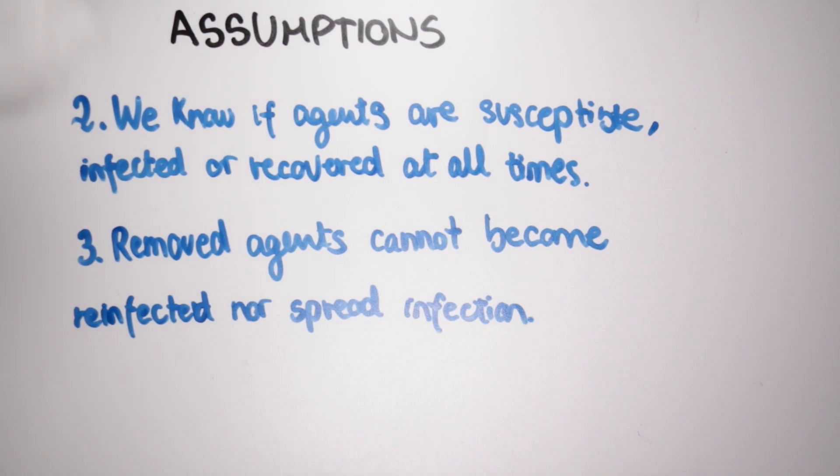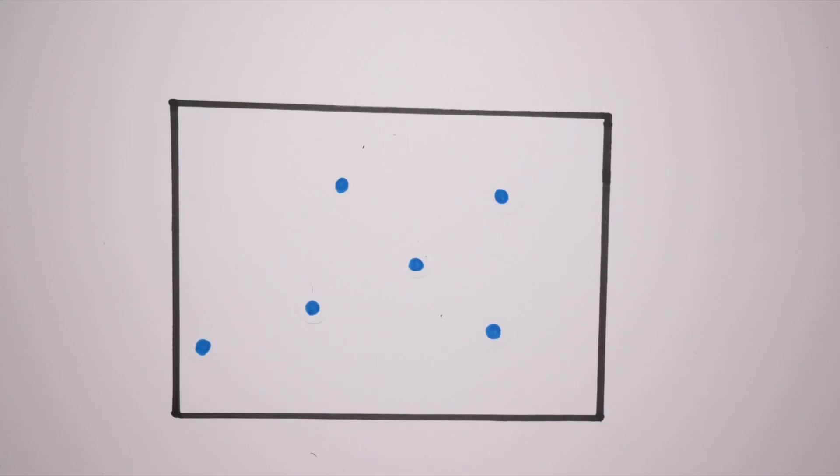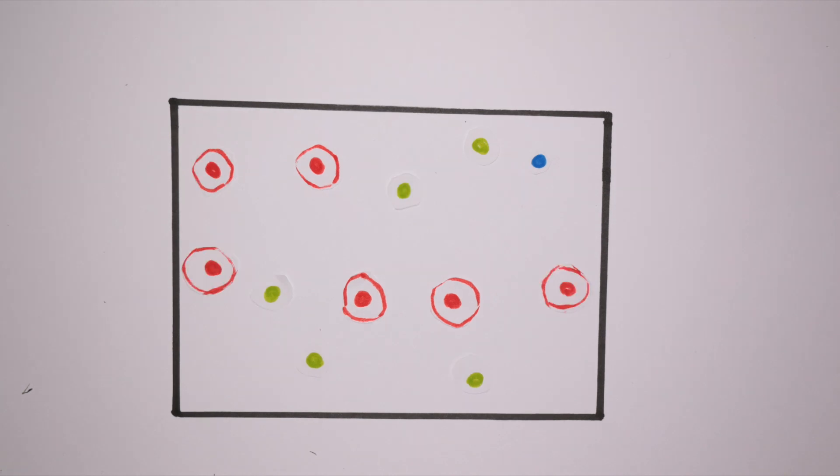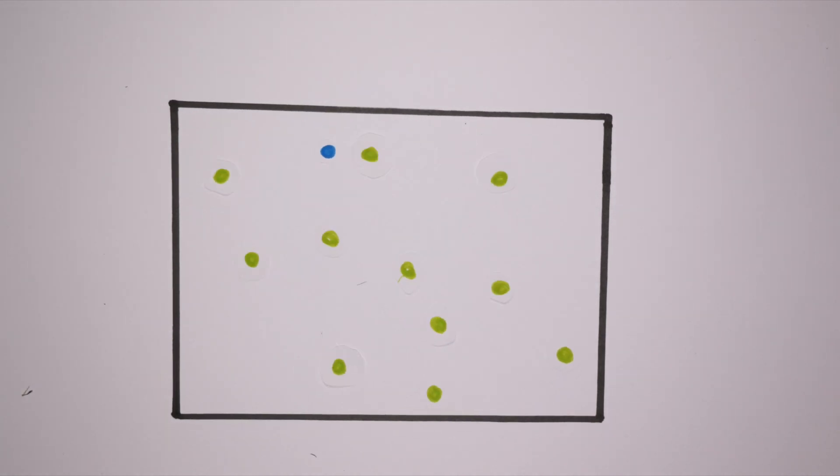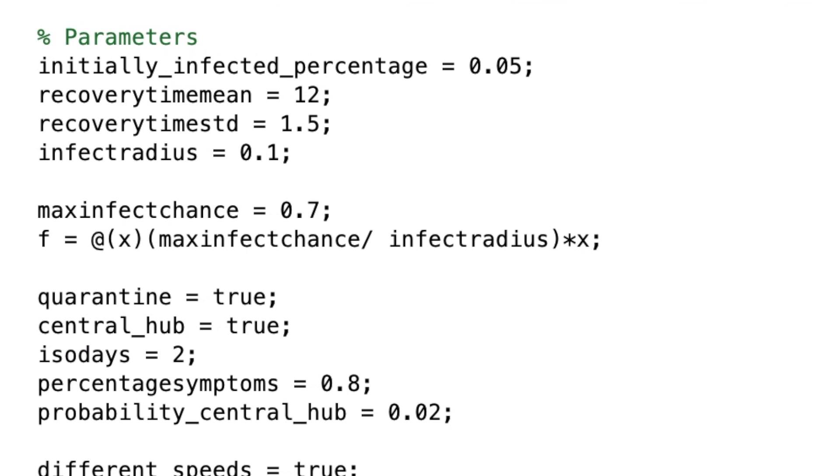That was a lot of preamble. Let's switch over to MATLAB and have a look at the baseline simulation. We made a box and put these agents in. For this simulation, we determined the population N. We distributed them randomly inside the square and then randomly infected five percent of the population. What we have here are the parameters. We're going to model our recovery as coming from a normal distribution with a mean of 12 and a standard deviation of 1.5. The infection radius is 0.1.